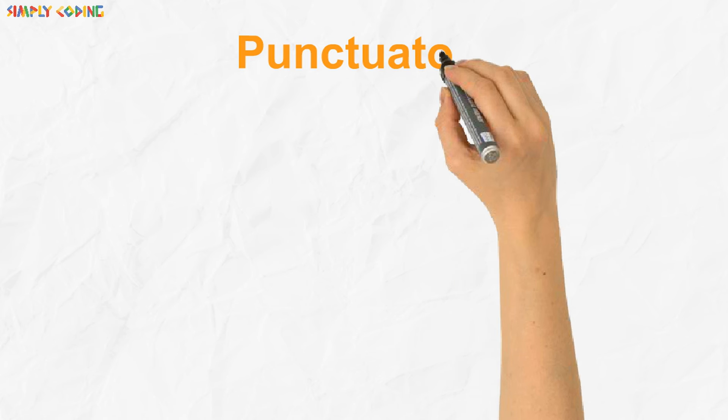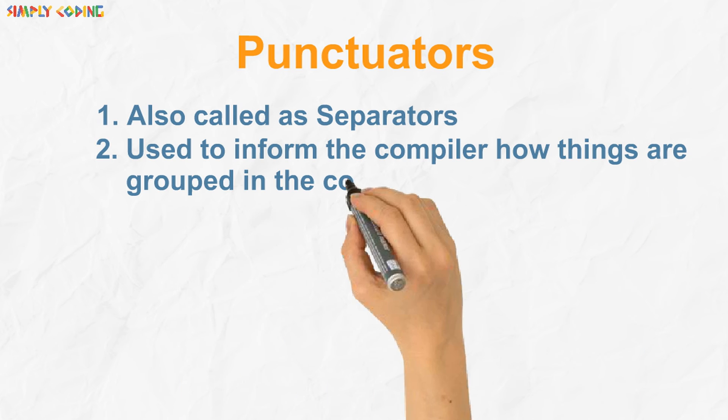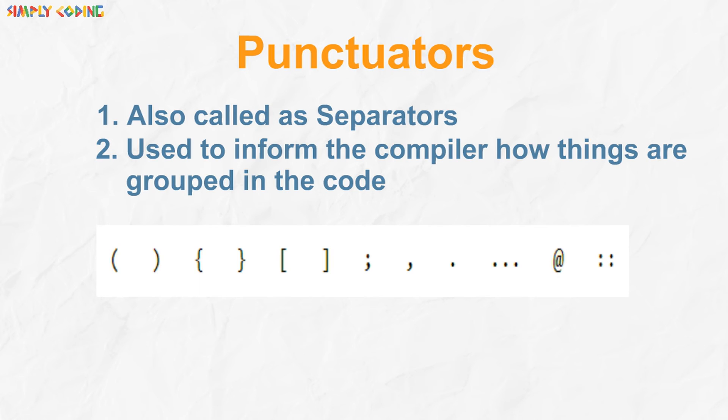Now let's take a look at punctuators. They are also called as separators and are used to inform the Java compiler of how things are grouped in the code. Most commonly used punctuator in Java is the semicolon. It is used to terminate statements. We are going to show how to use them as we start writing the programs.